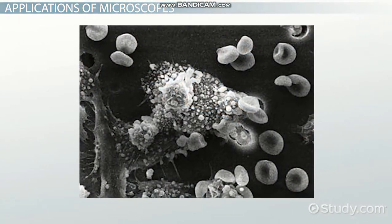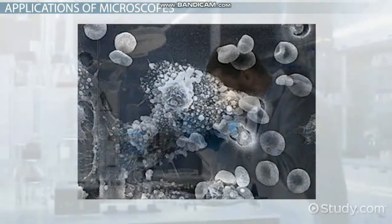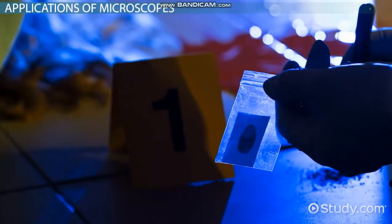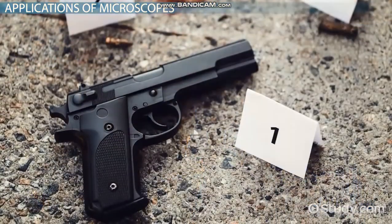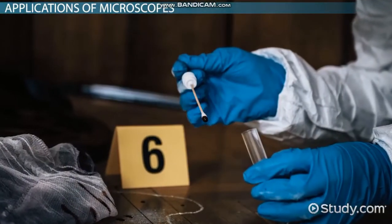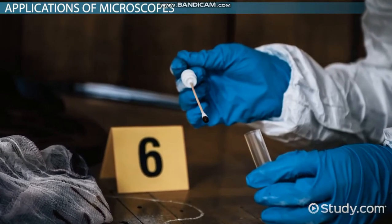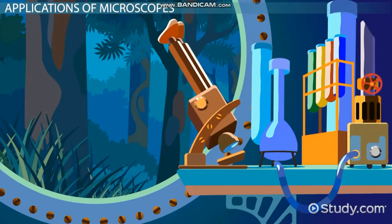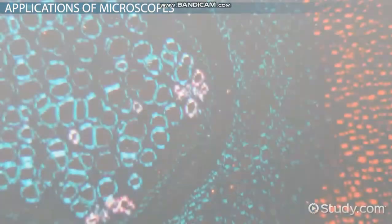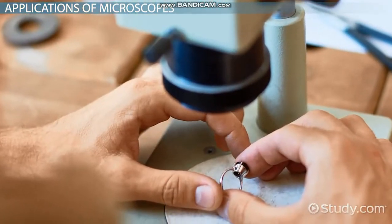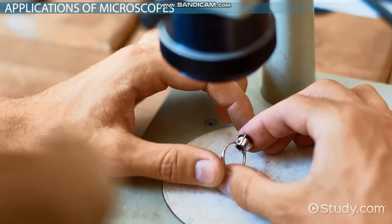Microscopes can also be used outside of the pursuit of knowledge itself. They can be used to look at data collected from a crime scene — for example, examining bullets to compare them to those found inside a particular gun, or doing DNA analysis to find out who was present at the scene of a crime. Microscopes can also be used in ecology to see the kinds of microorganisms present in an ecosystem, which can be a good way of monitoring the health of that ecosystem. Even jewelers use microscopes to look for details and flaws in jewels.